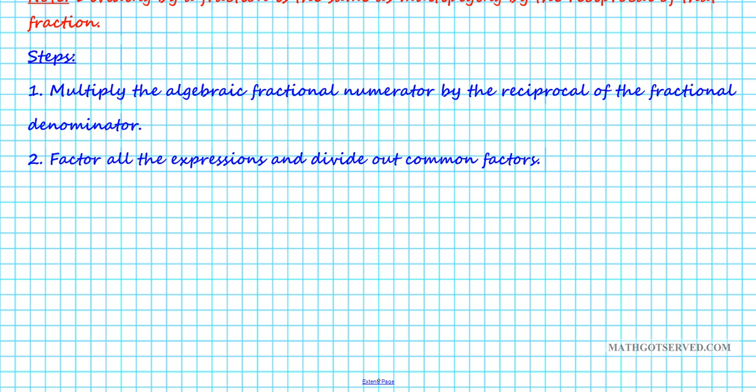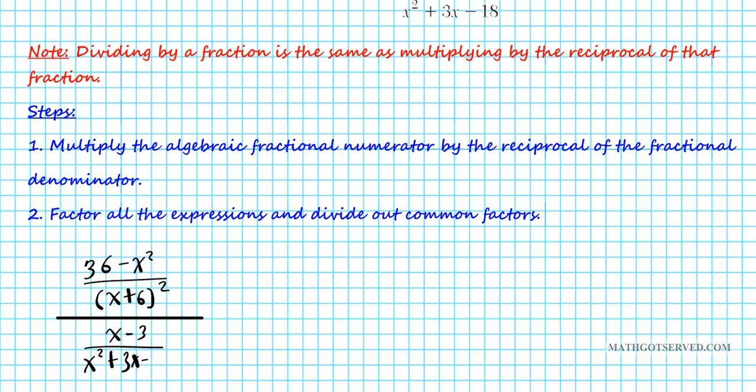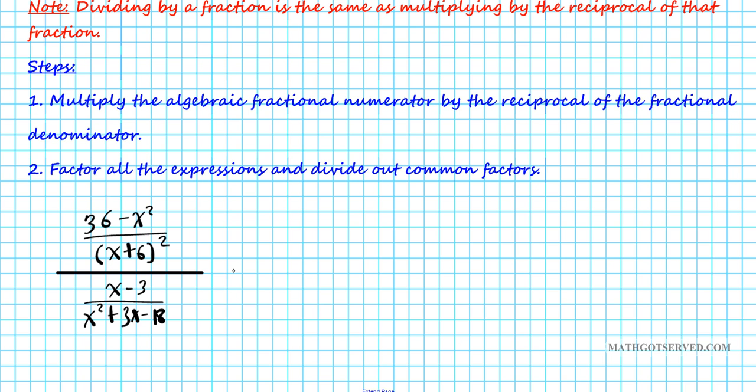Okay, so let's go ahead and get started with that process. So the original problem we had 36 minus x squared divided by the quantity x plus 6 squared, and that divided by the denominator, which was an algebraic fraction. We had x minus 3 over x squared plus 3x minus 18. Okay, so what we'll do is it's called drop change flip. That's an easy way to remember it. You take the numerator and just bring it down. You keep it.